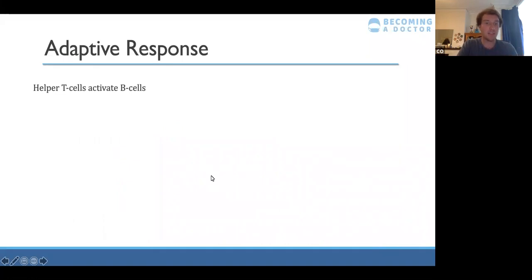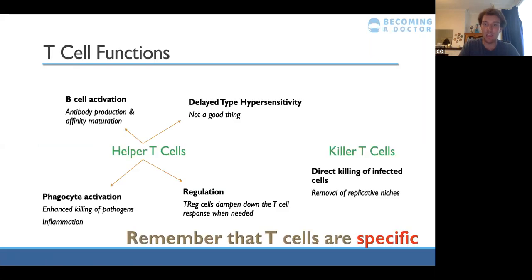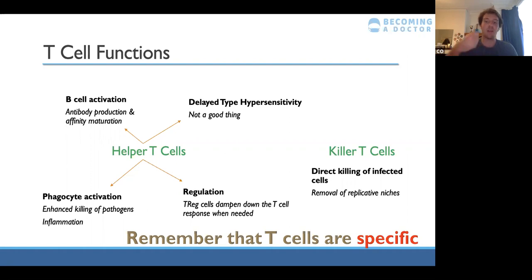Helper T cells activate B cells, which produce antibodies. Antibodies have four main functions. First, opsonization — enhancing phagocytosis by marking an antigen or cell for destruction, making it easier for phagocytes to see and destroy it. A question came up about replicative niche: for a virus, the niche is the intracellular environment it needs to replicate, using your own organelles. If you kill the infected cells, the virus can no longer replicate.